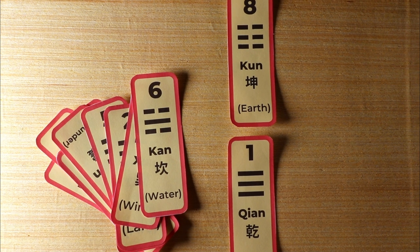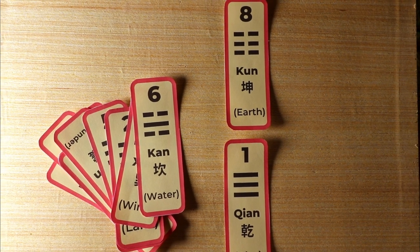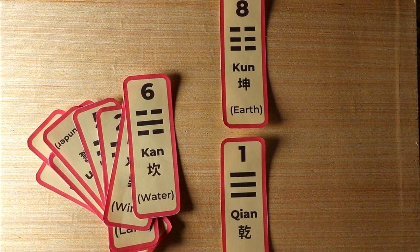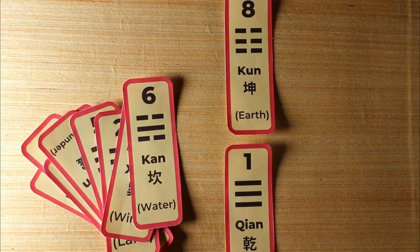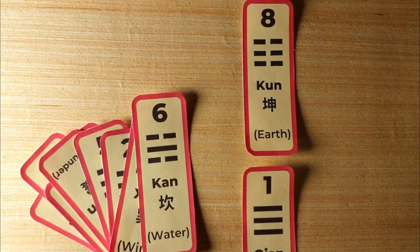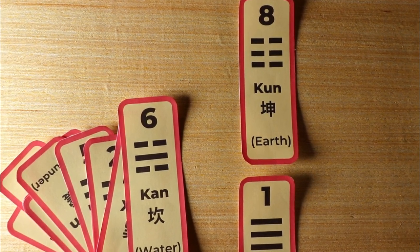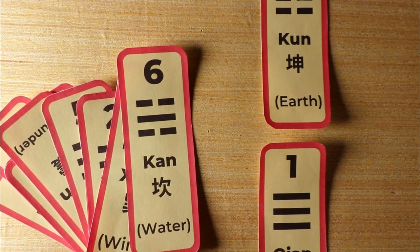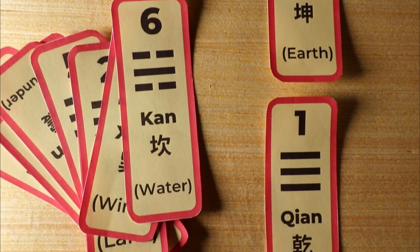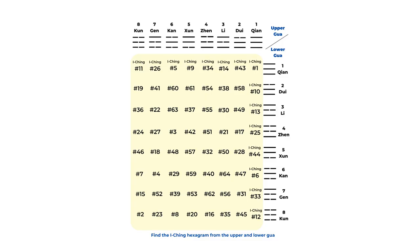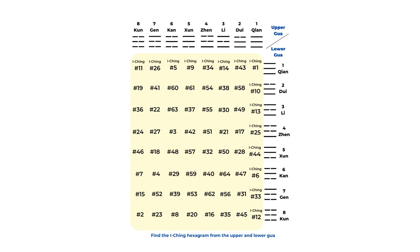Just like any divination, you have to concentrate and think of your question clearly. You can even write down your question and then start drawing. The first card can be the lower Gua and the second card can be the upper Gua. You can do it in reverse — just keep it consistent. Once you have your two Gua numbers, you can refer to this chart.